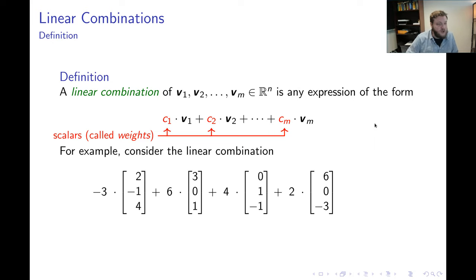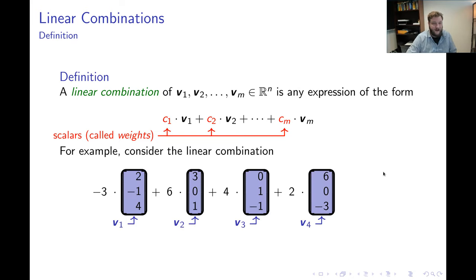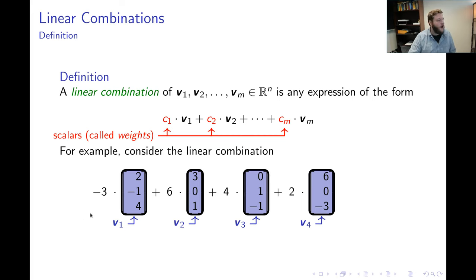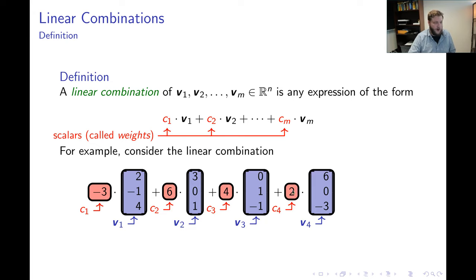Let's look at our first example. Here I'm taking a linear combination of four vectors, and each one of these four vectors has three coordinates. The weights I'm using: I'm scaling the first vector by negative three, the second vector by six, the third vector by four, and the fourth by two.